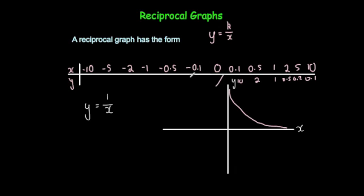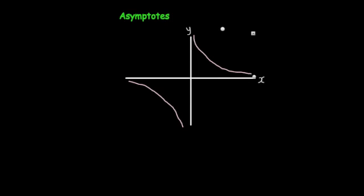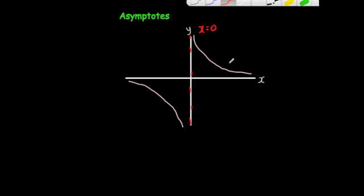1 divided by negative 0.1 would be minus 10; 1 divided by negative 0.5 would be minus 2; 1 divided by minus 1 is minus 1; 1 divided by minus 2 is minus 0.5; 1 divided by minus 5 is minus 0.2; and 1 divided by minus 10 is minus 0.1. Again, whenever you plot those, you're going to get something that looks like this. You'll have these two lines — the y-axis and the x-axis. It approaches those but never reaches them. That's called an asymptote. The y-axis, remember, the equation for the y-axis is x equals 0. And the x-axis is also an asymptote, and its equation is y equals 0. So those lines that the graph approaches but never reaches are called asymptotes.